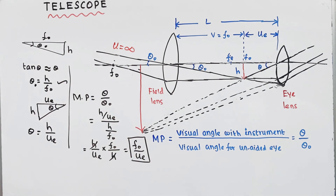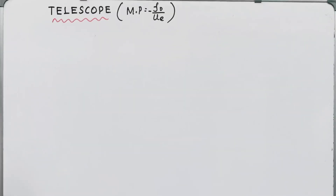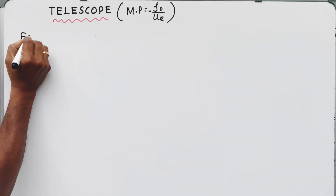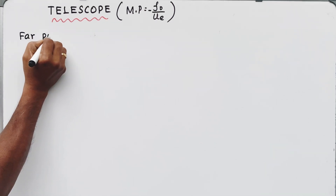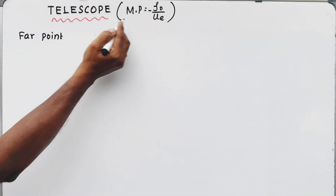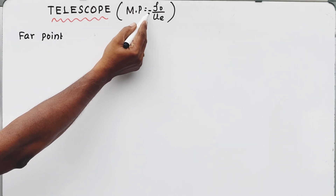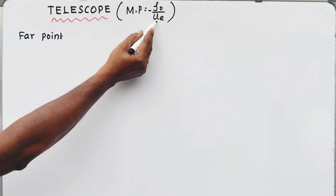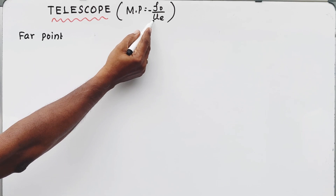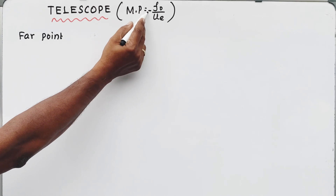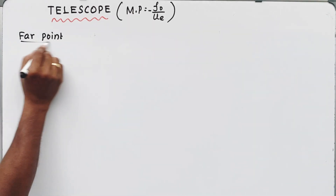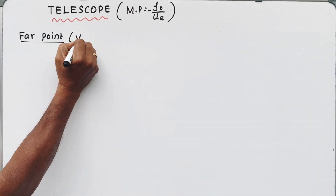The magnifying power of the telescope — in the case of far point and near point: for the far point first, the magnifying power is minus f-not by uₑ. Putting uₑ — on the left side, by Cartesian sign rules, the minus sign applies. For the far point, in a mono later you being a critical image.